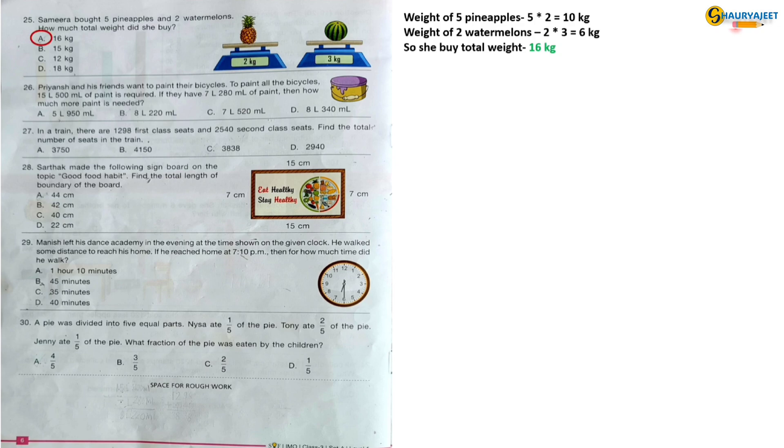Question 26: Priyans and his friends want to paint their bicycles. To paint all the bicycles, 15 litre 500 ml of paint is required. If they have 7 litre 280 ml of paint, then how much more paint is needed? Total paint they require is 15 litre 500 ml, and the total paint they have is 7 litre 280 ml. So if we minus them, the answer is 8 litre 220 ml. So the correct option is option B, 8 litre 220 ml.